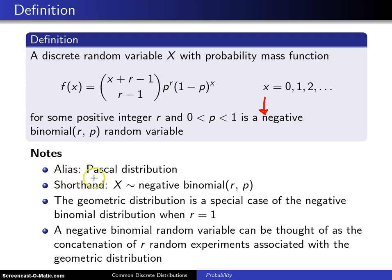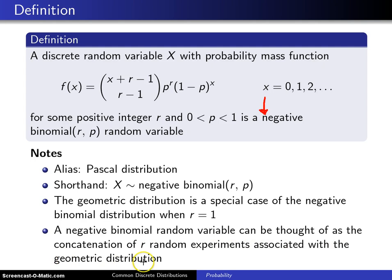Four notes: First, the negative binomial distribution is sometimes called the Pascal distribution, though not very often. Second, the shorthand is x distributed as negative binomial with parameters r and p. Third, the geometric distribution is a special case of the negative binomial when r equals one. Fourth, a negative binomial random variable can be thought of as the concatenation of r geometric experiments — each time you reach a success, you restart until you get the rth success.